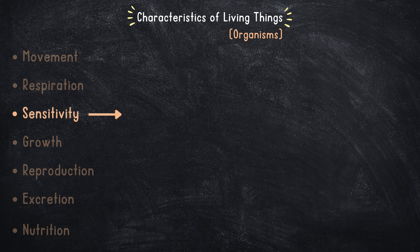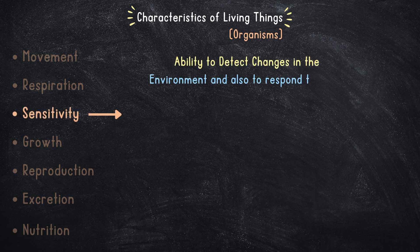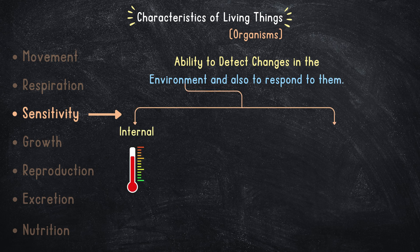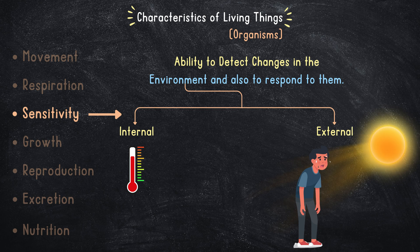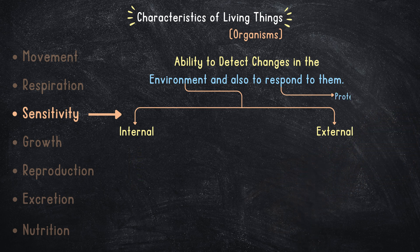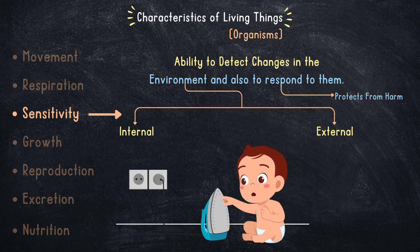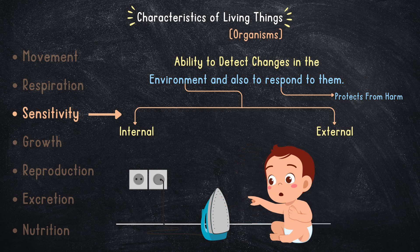Sensitivity is the ability to detect changes in the environment and respond to them. These changes can happen internally, like your blood temperature rising, or externally, like high intensity of sunlight during summers. This ability to respond to change protects us from harm — for example, if you touch a hot iron, your immediate reaction is to pull your hand away.